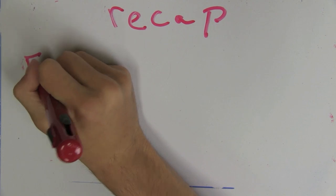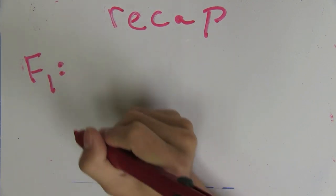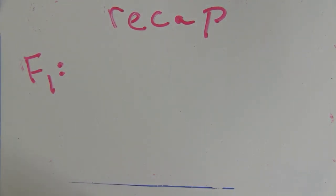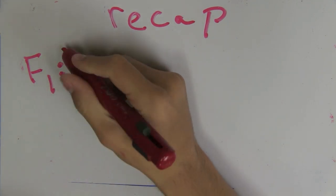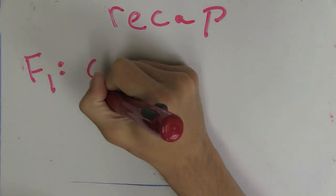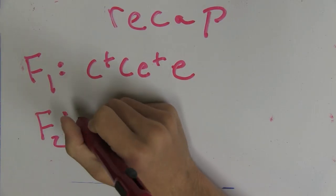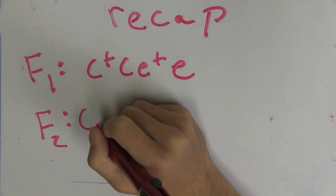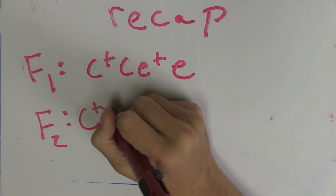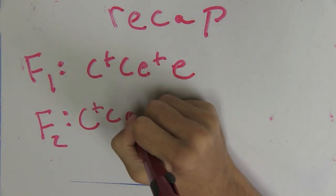So let's just recap briefly. The F1 generation, which resulted from the parental cross, was heterozygous with normal straight wings and gray bodies with the genotype C plus C, E plus E. And then we found that the F2 offspring were in a one to one to one to one ratio with these genotypes.